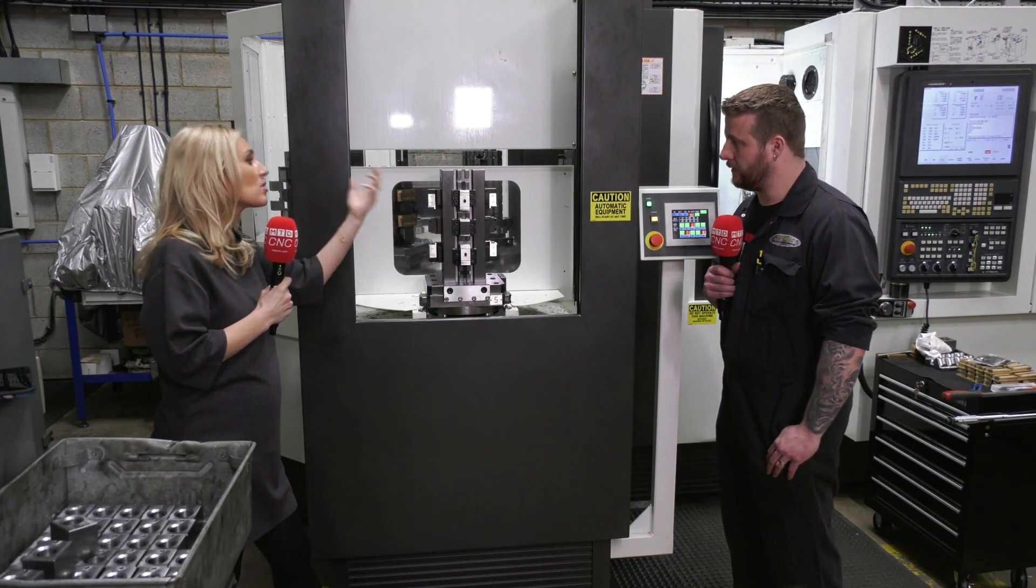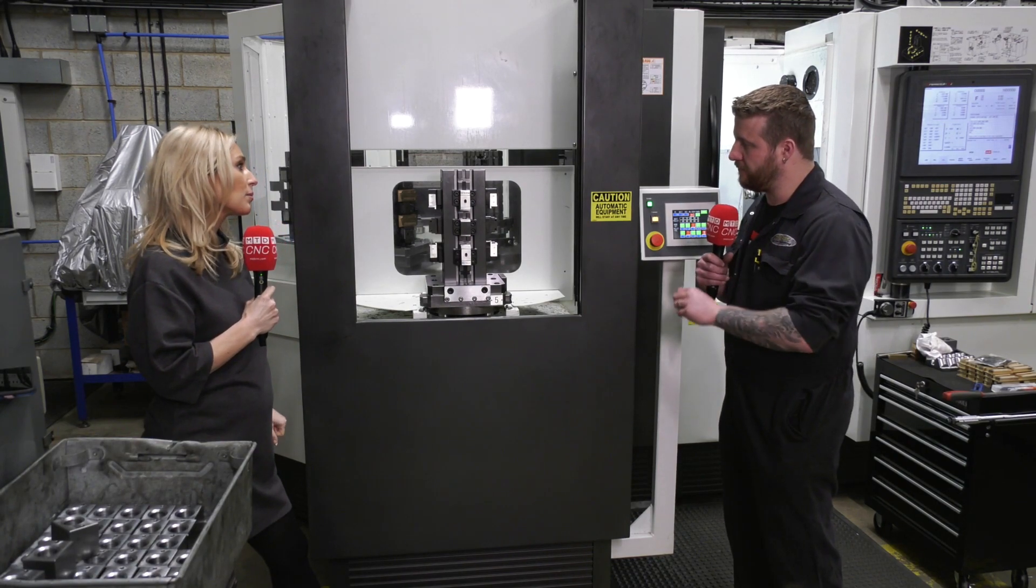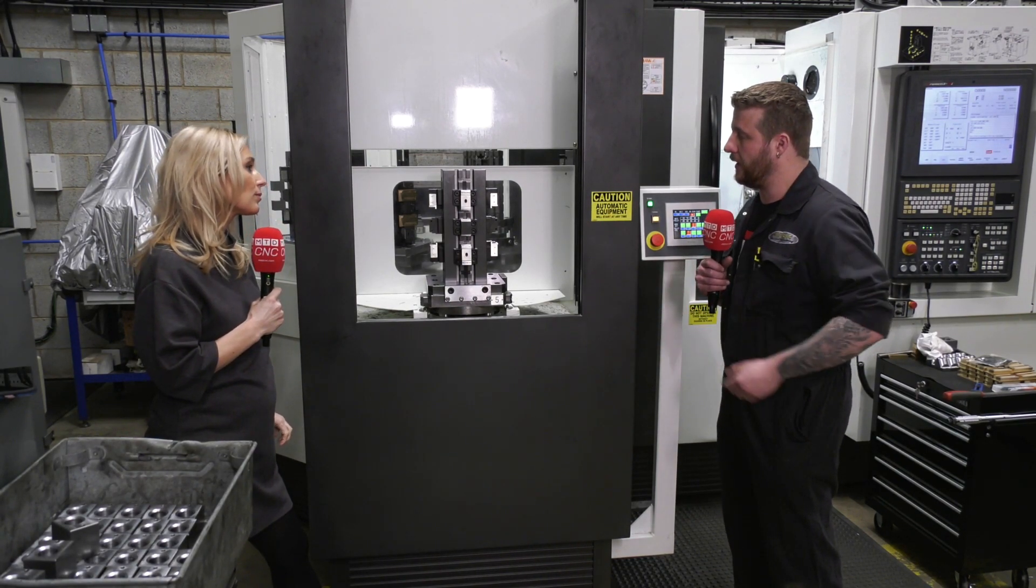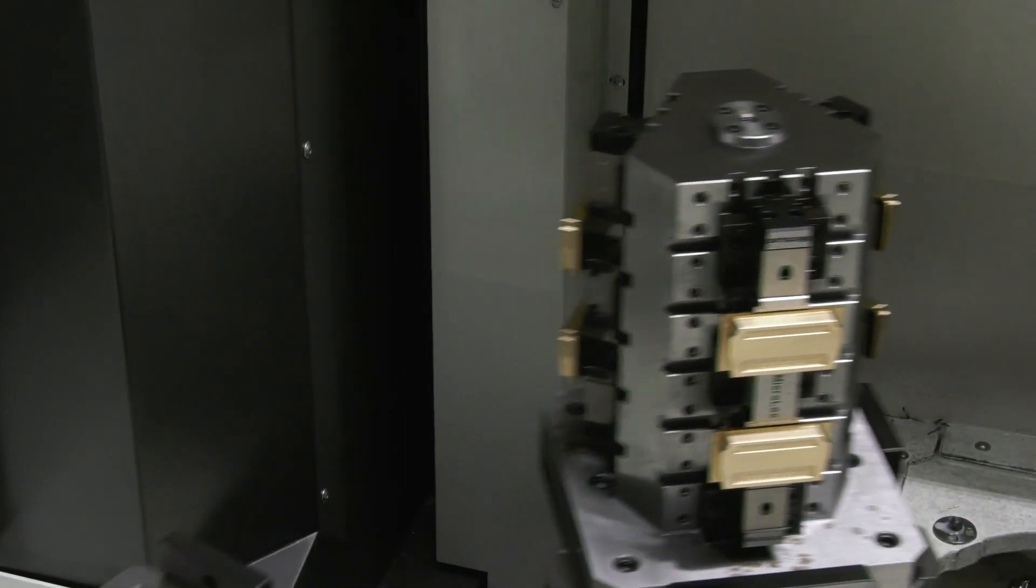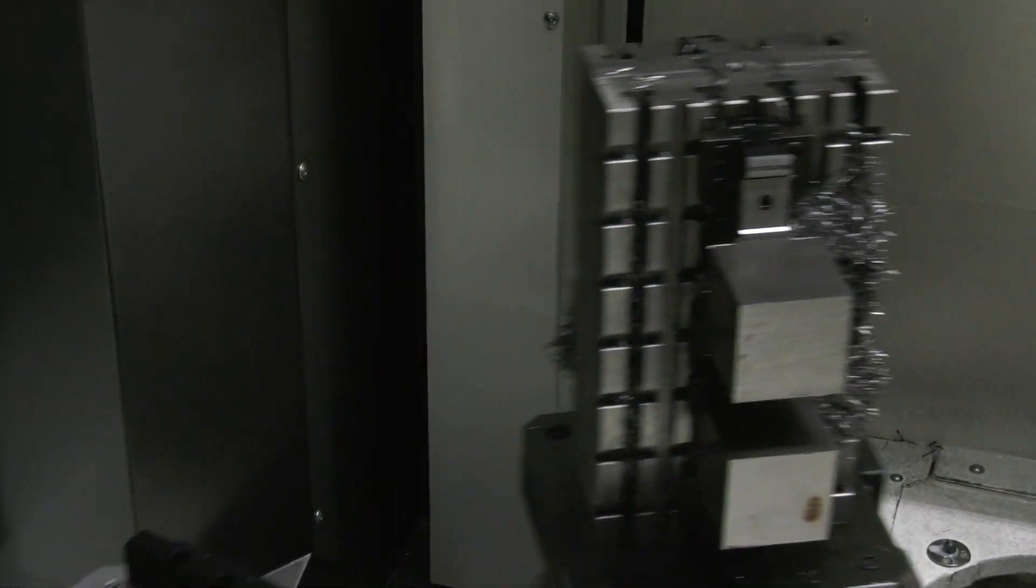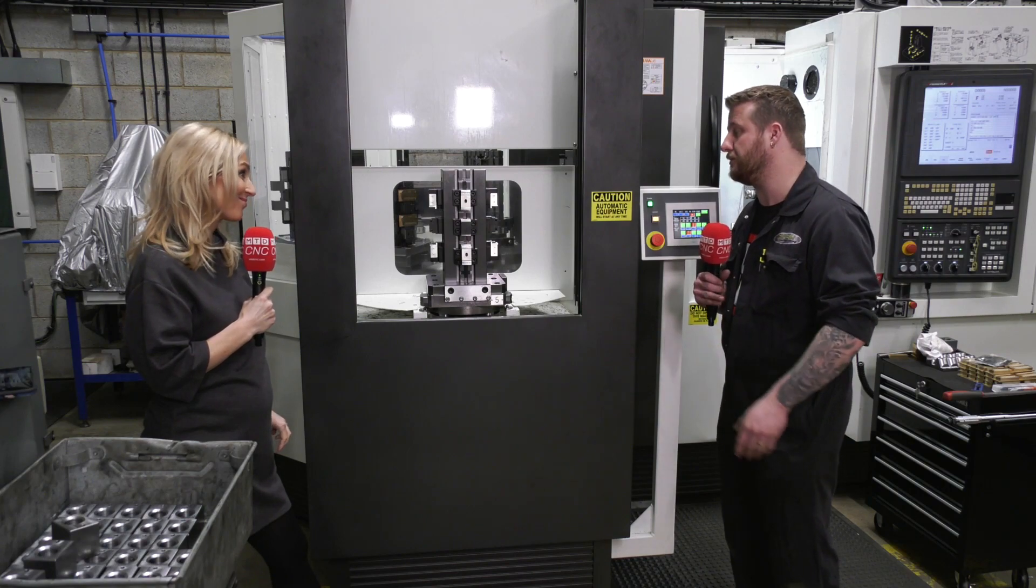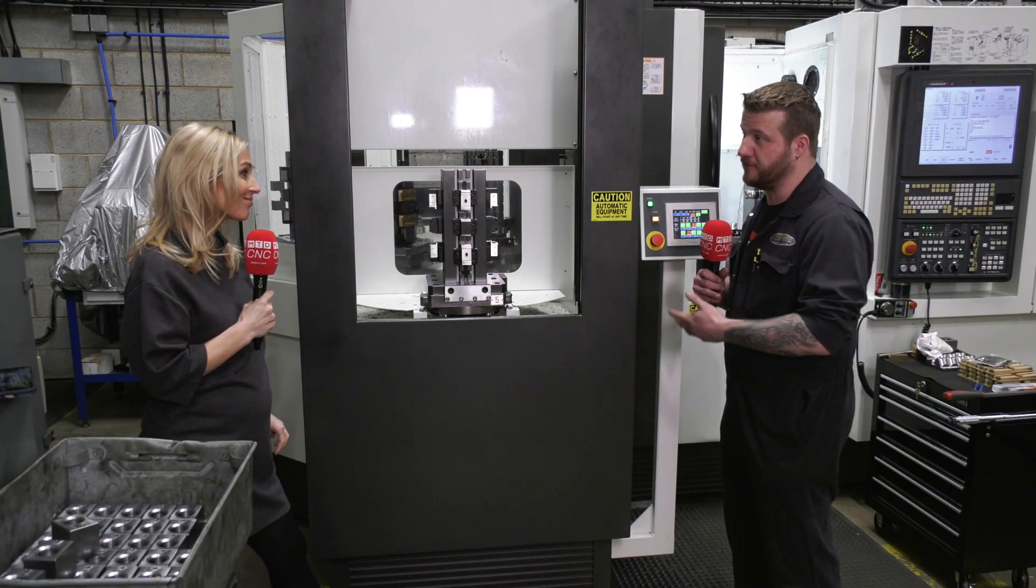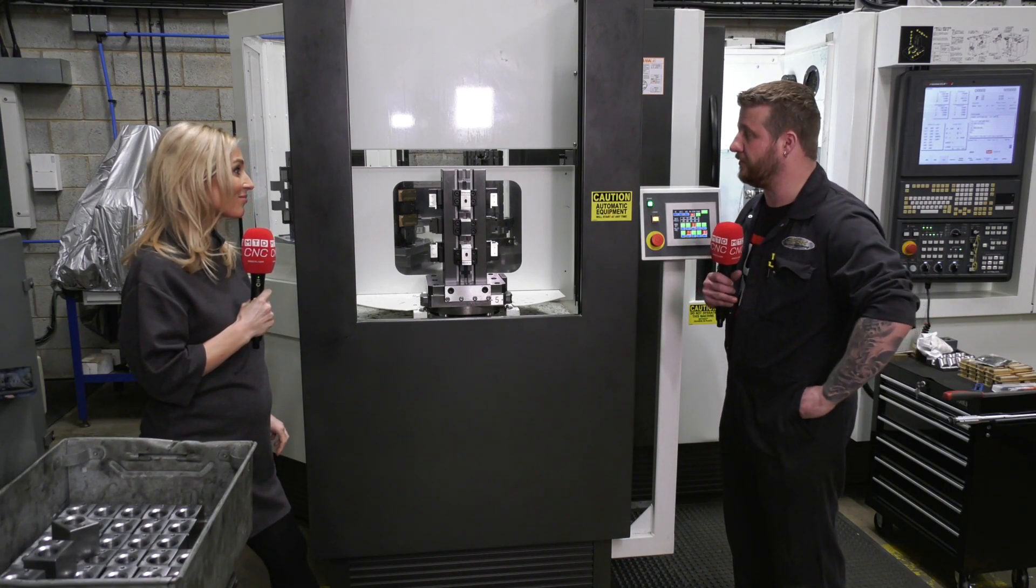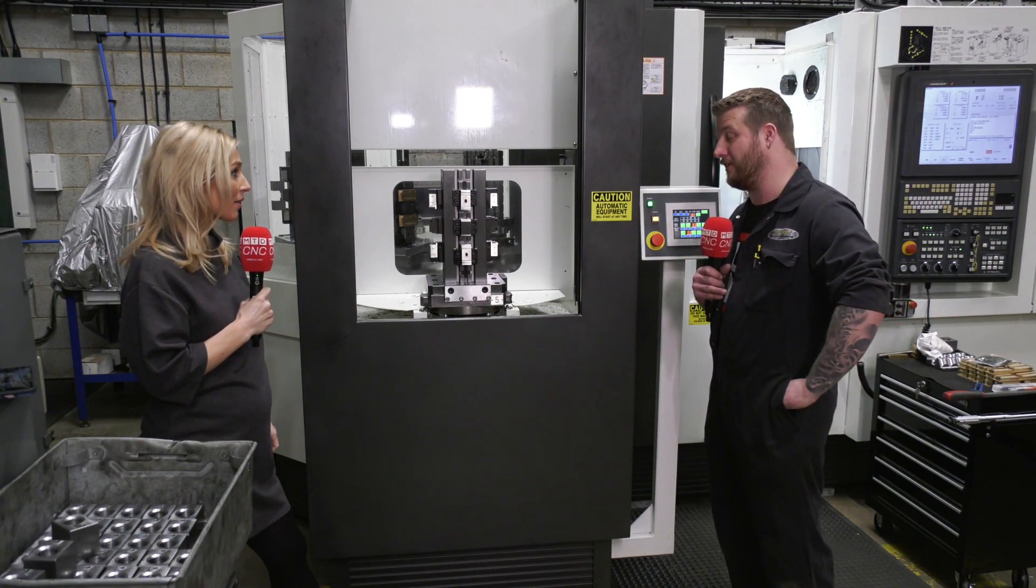Each of the cubes, tombstones, and triangles has the same vice setup, but each vice has different parallels, different heights of parallel, and different jaws—soft jaws, hard jaws, gripper jaws. Stop arrangements are very flexible. From a subcontractor's point of view, it covers as many bases as we can think of.